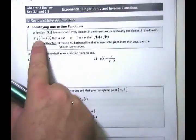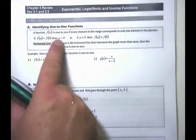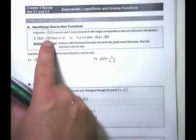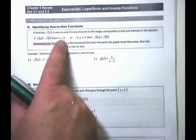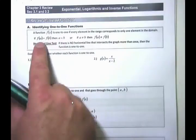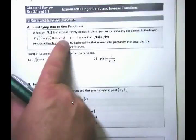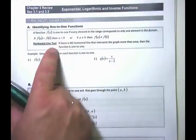By definition, if F of A equals F of B, that implies A has to equal B. Because there's only one element in the domain that's going to map to the range. So if the range values are equal, the domain values have to be equal to each other.